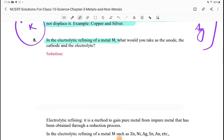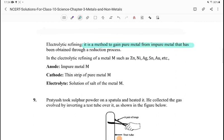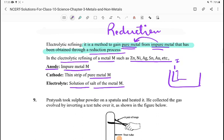Question 8: In the electrolytic refining of metal M, what would you take as anode, cathode and electrolyte? Electrolytic refining is a method to obtain pure metal from impure metal that has been obtained through a reduction process. In electrolytic refining of metal M such as Zn, Ni, Ag, Sn, Au: anode is impure metal, cathode is pure metal, and electrolyte is solution of salt of metal M. Remember, at anode there is impure metal, and at cathode there is pure metal.